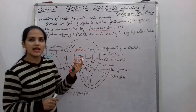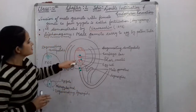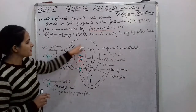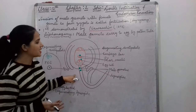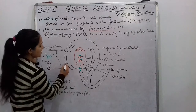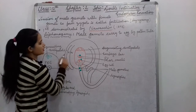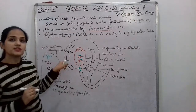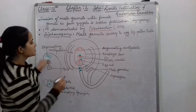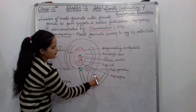So let's understand double fertilization with the help of a diagram. This is the diagram of an ovule. As we discussed in our previous class, these two are integuments: number 1 outer integument and number 2 inner integument. This is the nucellus, which provides nourishment or nutrition to the developing embryo sac. This is the embryo sac structure — now what happens in double fertilization?